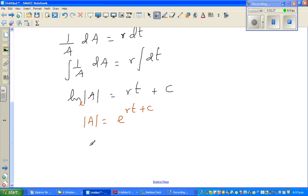I can remove the modulus since A is an amount and always positive. So A = e^(rt) × e^c. Now e is a constant and c is also a constant, so I'm going to replace e^c as A₀.